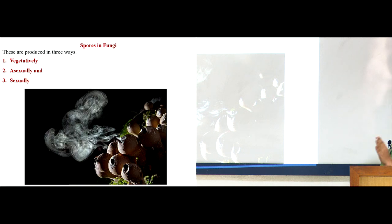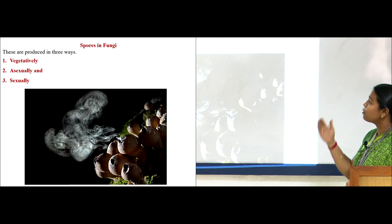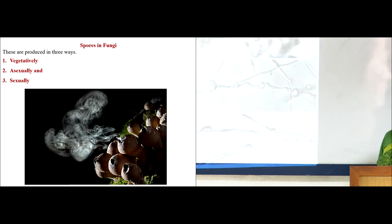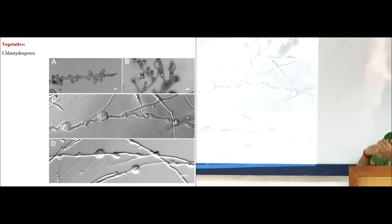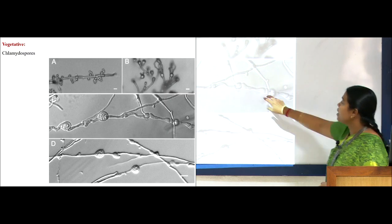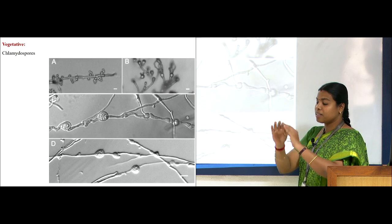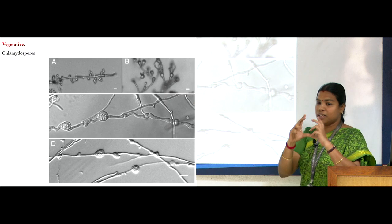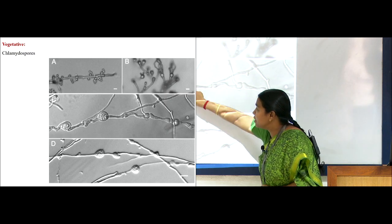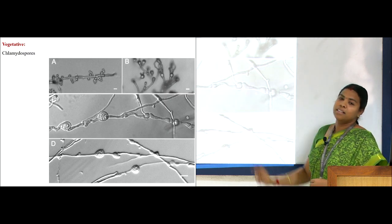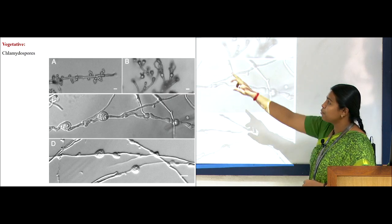Fungi reproduce by spores in three ways: vegetative reproduction by vegetative spores, asexual reproduction by asexual spores, and sexual reproduction by sexual spores. Vegetative reproduction is usually done by chlamydospores. During unfavorable conditions, the vegetative mycelium differentiates compartments into highly resistant spores — the protoplast accumulates with nucleus, bulges, and is surrounded by a very thick wall. During favorable conditions, it detaches from the vegetative mycelium and germinates to form new structures. Chlamydospores form during unfavorable conditions by vegetative mode.